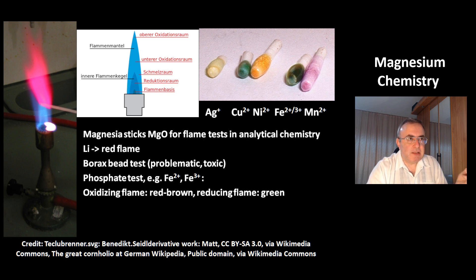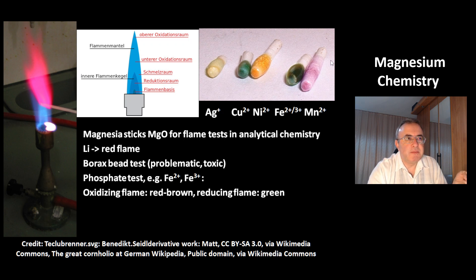At the right you can see examples of a phosphate bead. For example, with iron-2 and iron-3 ions you get a red-brown bead with an oxidizing flame, and with a reducing flame you get a green bead. With manganese you get a pink bead, nickel gives orange, copper gives greenish, and silver gives bright yellow.